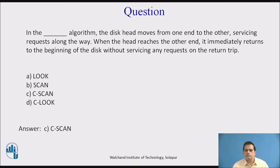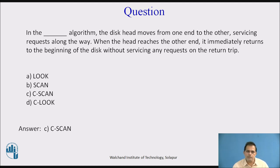As seen in the previous slide, from one end we move to zero without giving service to any request. Then from the beginning, we go again in the right direction and service the remaining requests. So the answer is C-Scan.